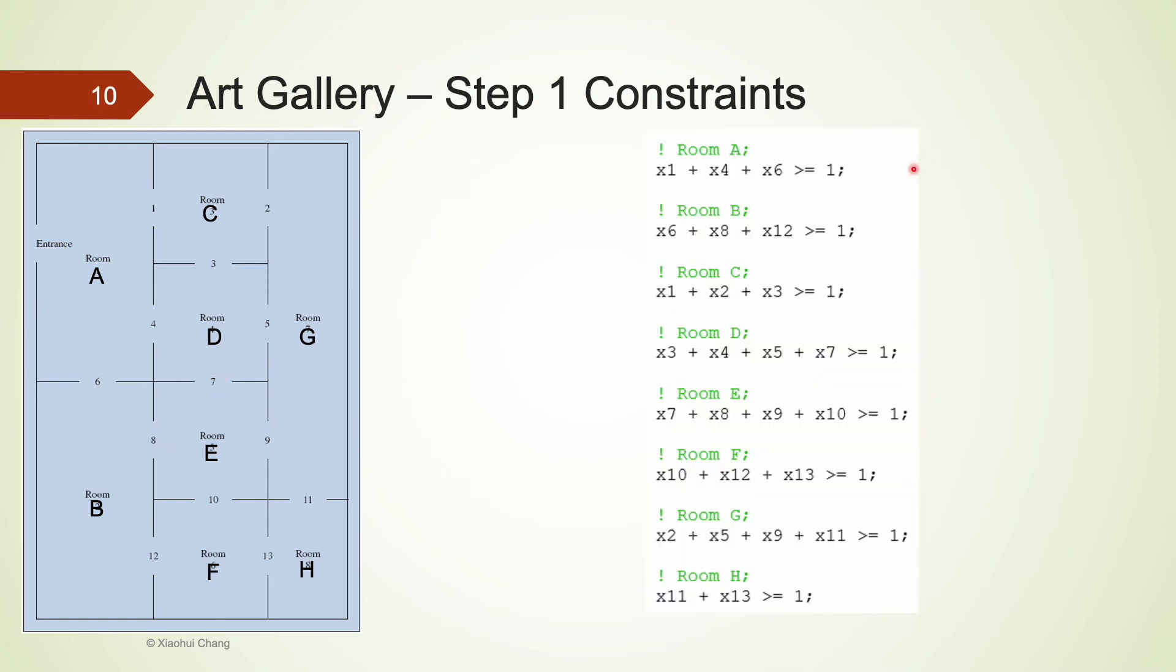There will be 1 constraint for each room. In total, we would have 8 constraints. Please pause the video here to see whether you fully understand all of the constraints.